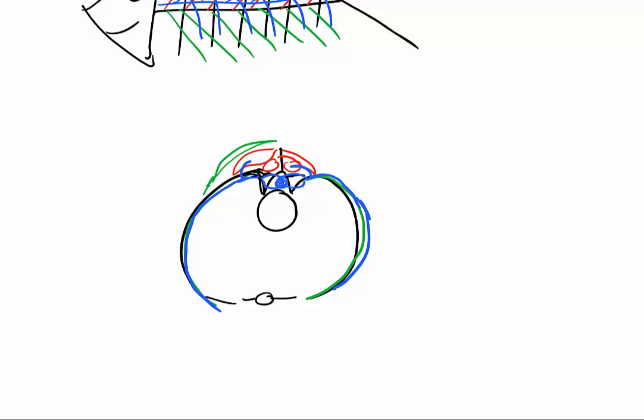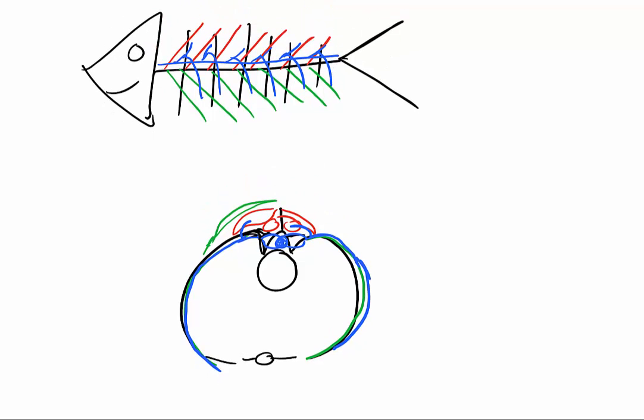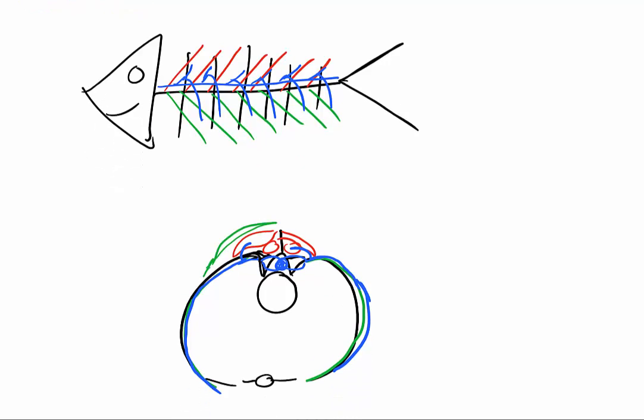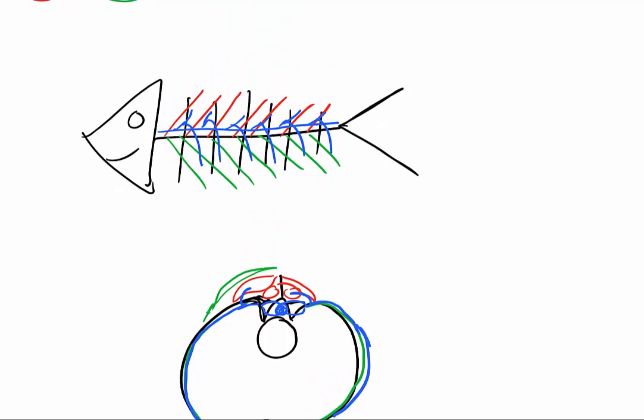So when we're looking at intrinsic muscles of the back, we're looking at muscles that are innervated by the dorsal ramus of the spinal nerves, and that's what we would call epaxial muscles.